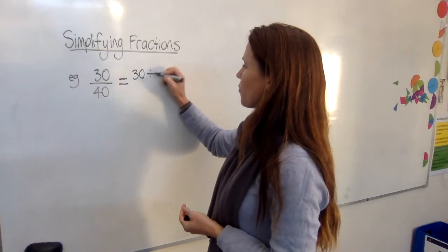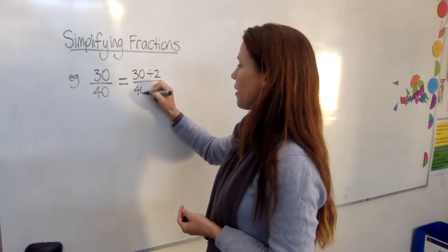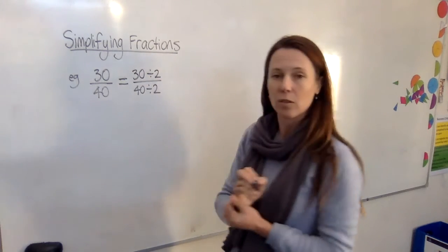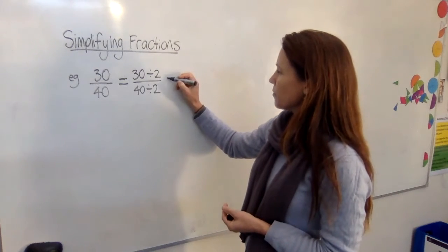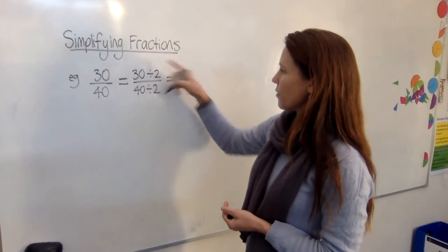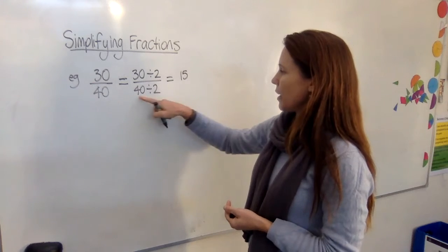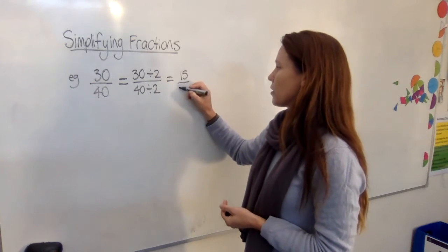So you write down what you're going to do. I'm going to divide them by two, divide that one by two, divide that one by two. And that will give me 30 divided by two, which is 15, and 40 divided by two, which is 20.